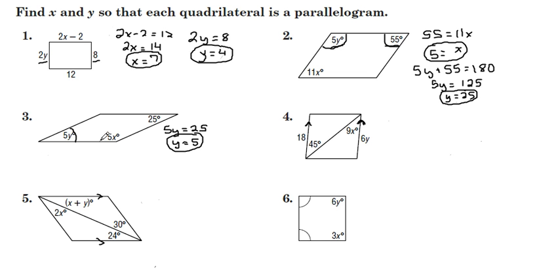Consecutive angles will be, if it is in fact a parallelogram, add up to 180. 5y plus 5x equals 180. But I have two different variables here. I'll use my y equals 5. 25 plus 5x equals 180.